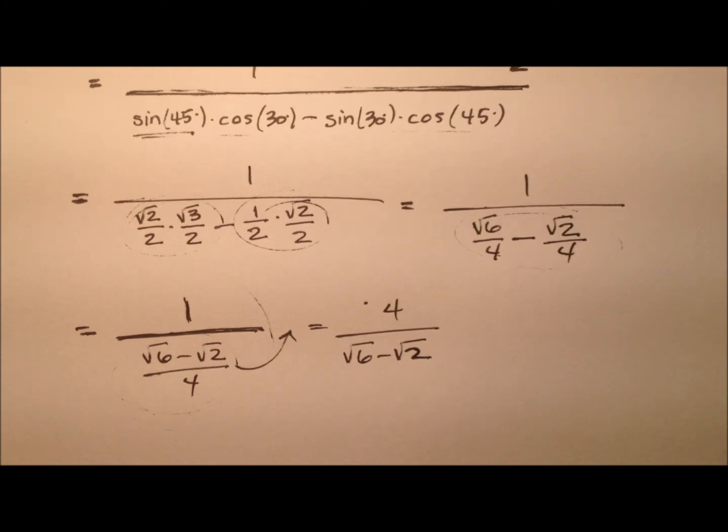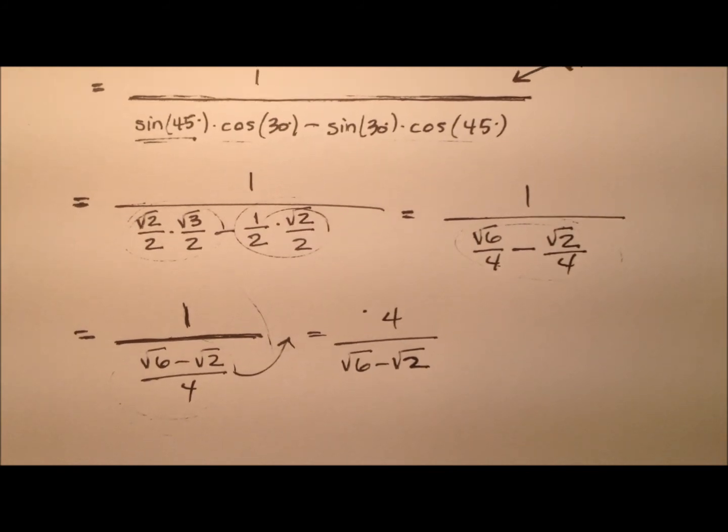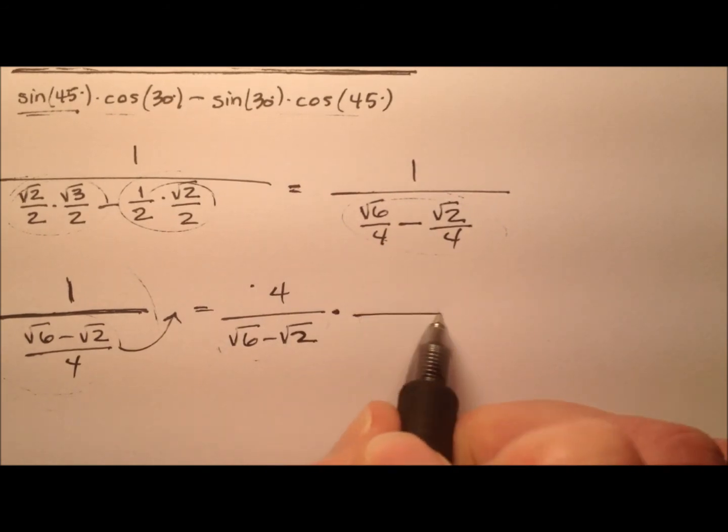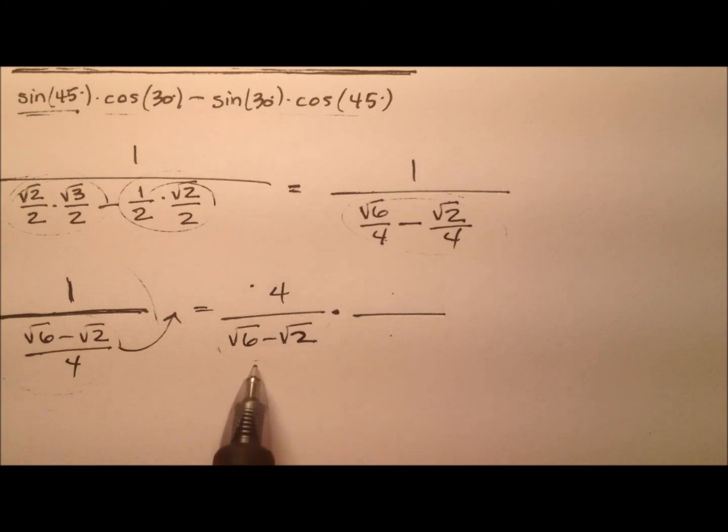This is going to be our cosecant of 15 degrees, but we don't like having irrational numbers in the denominator. So let's rationalize the denominator by multiplying numerator and denominator by the conjugate. The conjugate means we change that sign in the middle to set up a difference of squares in the denominator, which will get rid of the radicals.